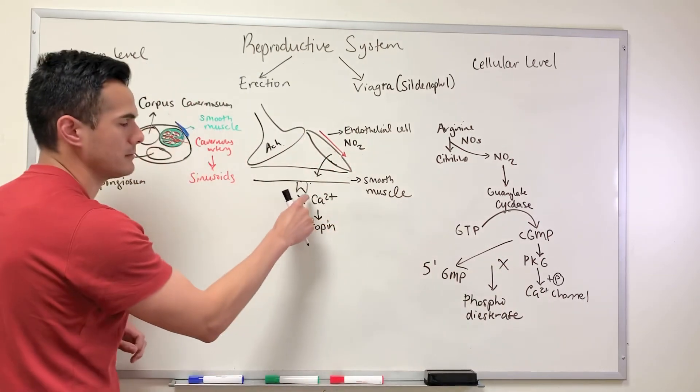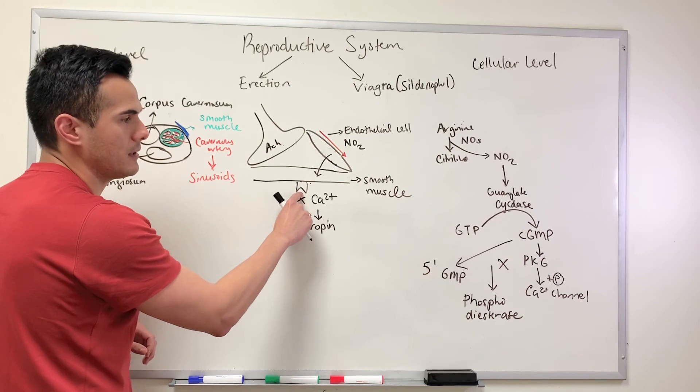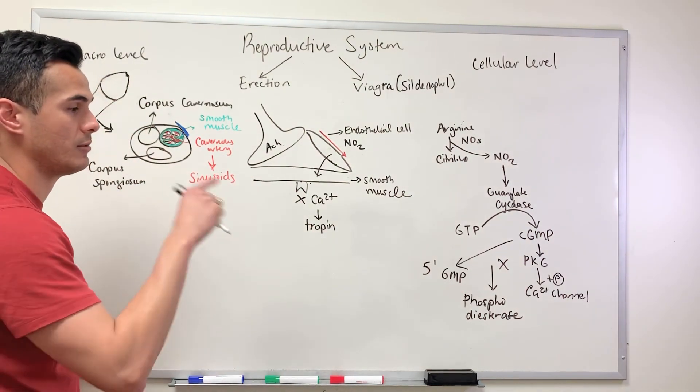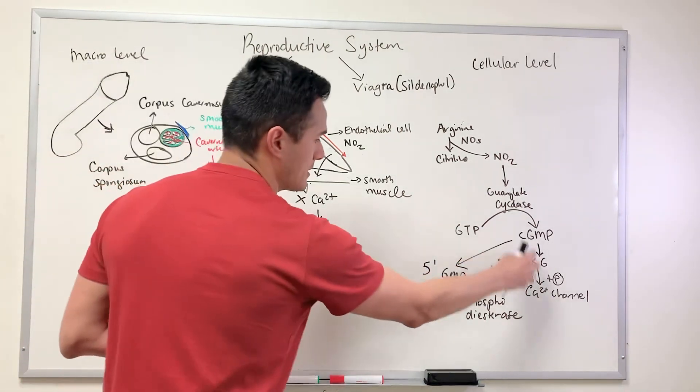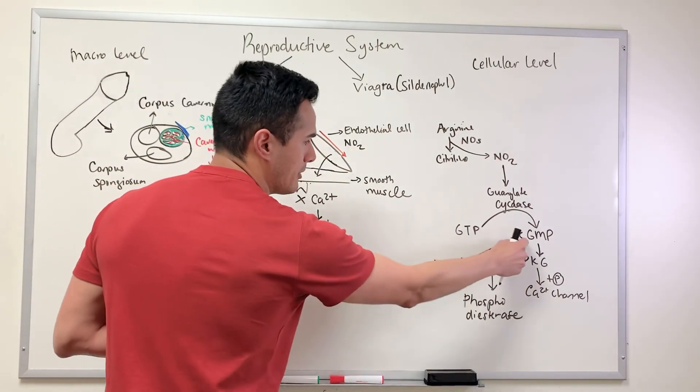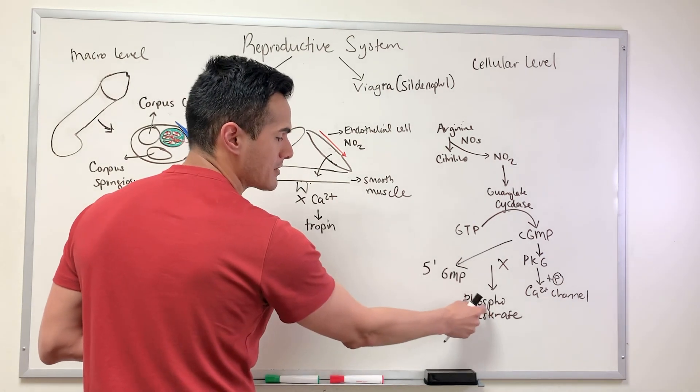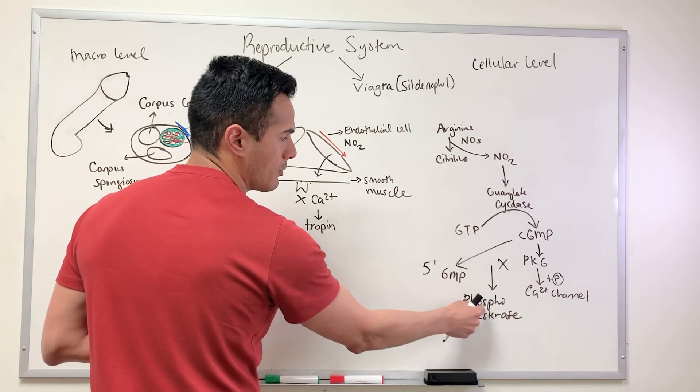If the calcium channel remains inactive, the man can keep his erection because this pathway is continued and we're not degrading cyclic GMP into five prime GMP. This is the enzyme here, phosphodiesterase. This is what we're going to target in order to prevent this degradation.